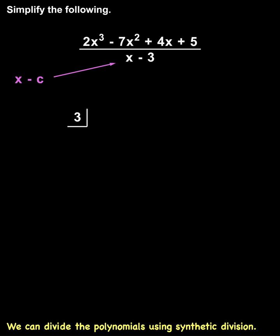Next, we write the coefficients of the dividend, which are 2, negative 7, 4, and 5. Be very careful with your signs. Now we're ready to start our synthetic division.